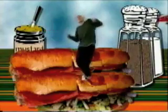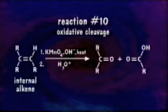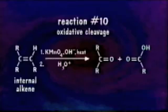The second type of oxidative cleavage reaction involves an alkene and hot potassium permanganate. When an internal alkene is treated with hot potassium permanganate, the two products are a ketone and a carboxylic acid. If the reactant alkene has a terminal double bond, however, the two products are a ketone and carbon dioxide from carbonic acid.